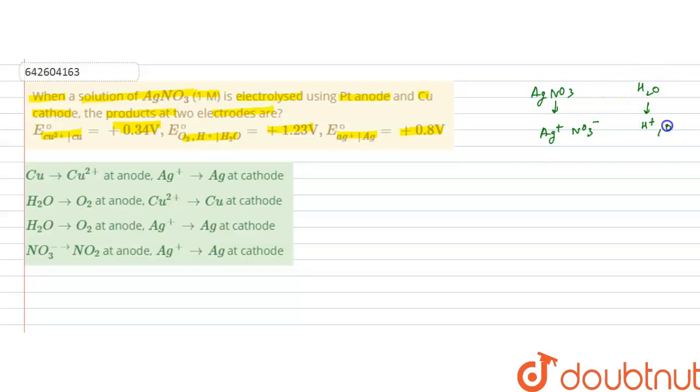Now at cathode, reduction takes place. Reduction of either Ag⁺ or H⁺ can take place. As the standard potential of Ag⁺ to Ag reduction is 0.8 volt and the reduction of H⁺ to form H₂ is 0.0 volt, the reduction potential of silver positive to silver is more.